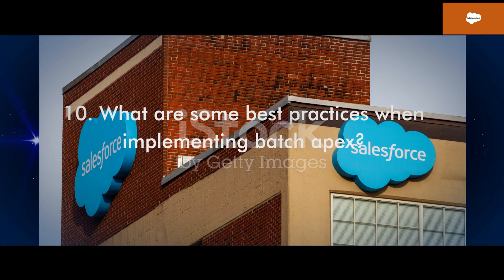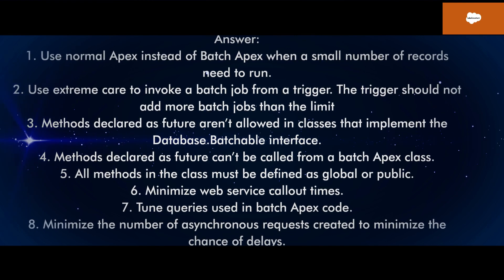Q10: What are some best practices when implementing batch Apex? 1. Use normal Apex instead of batch Apex when a small number of records need to run. 2. Use extreme care to invoke a batch job from a trigger — the trigger should not add more batch jobs than the limit. 3. Methods declared as future aren't allowed in classes that implement the Database.Batchable interface. 4. Methods declared as future can't be called from a batch Apex class.